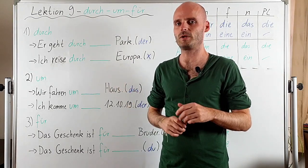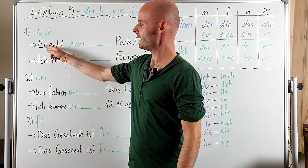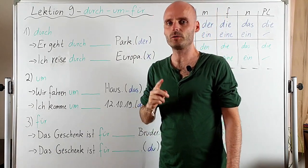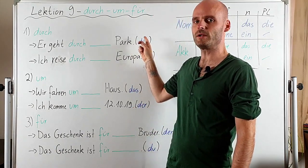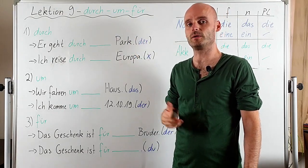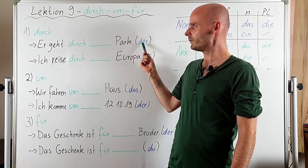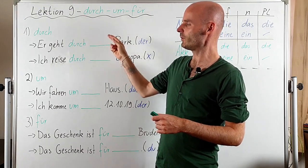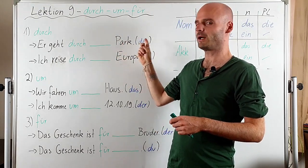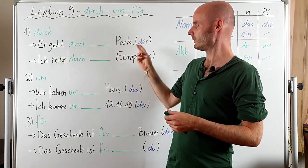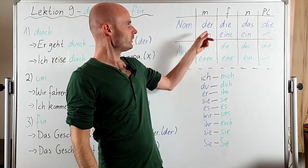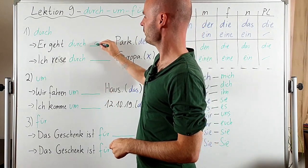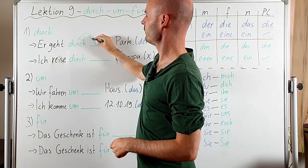But 'through' is actually pretty much the same as in English. For example: 'Er geht durch den Park.' You have to know the grammatical gender of 'Park' — it's 'der Park' in nominative, and 'den' in accusative. So 'Er geht durch den Park' — 'durch' makes this accusative. He goes through the park. Another example: 'Ich reise durch Europa' — I travel through Europe.